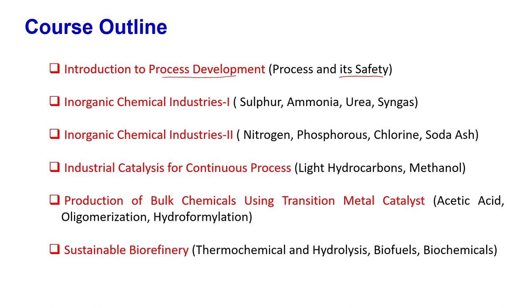Then we go ahead and look at the next two modules on inorganic chemical industries, which closely coincide with the Chemical Process Technology syllabus of the undergraduate curriculum. The elements and compounds to be taught include sulphur — covering sulphur dioxide and sulphuric acid — then nitrogen, mainly ammonia synthesis, then urea synthesis, and finally syngas, which is a mixture of carbon monoxide and hydrogen. We will also cover nitrogen compounds, phosphorus compounds like phosphoric acid, chlorine, and soda ash production. These are the conventional chemicals.